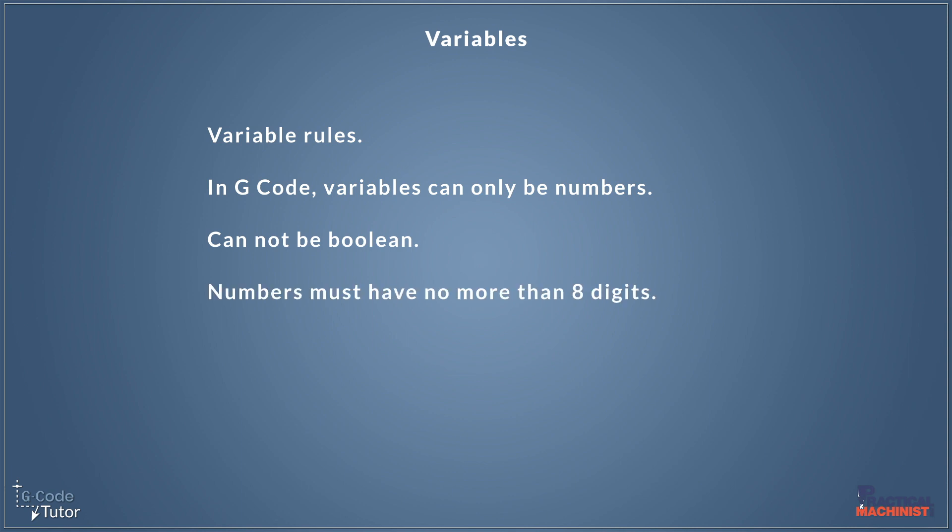So the other main rule is that we cannot have no more than eight digits inside our variable. And this doesn't matter where the decimal point is. So we could have, for example, 1234.5678. Or we could have 01234.567. So in total, we can't have more than eight digits, but the decimal points can lie anywhere within those eight digits. And a zero at the beginning of this number is also counted as a digit.